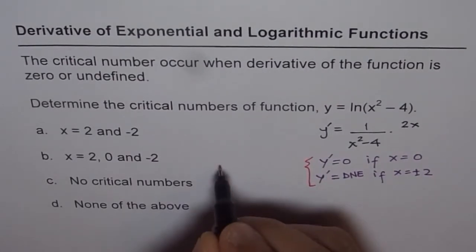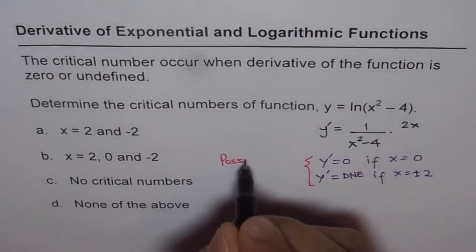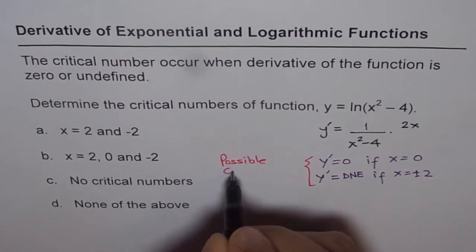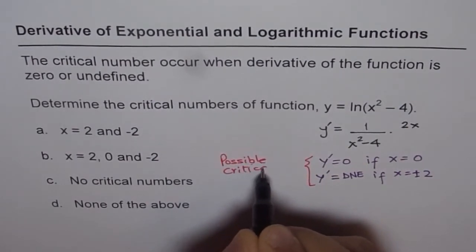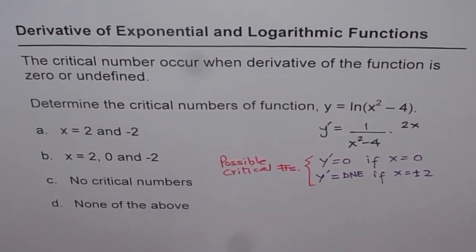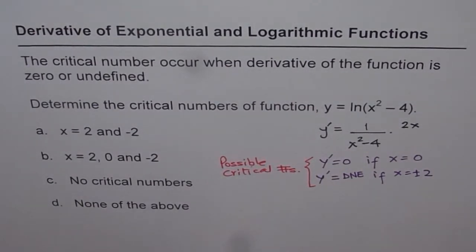We call them possible critical numbers. But are they really critical numbers? This is what we should check. How can we check that?